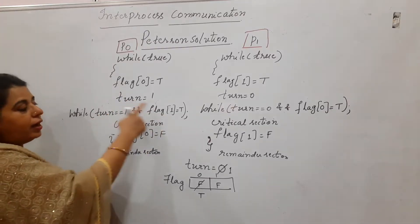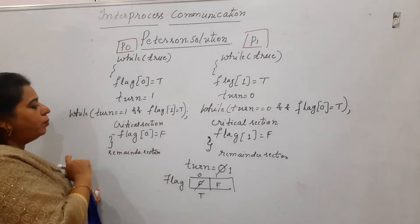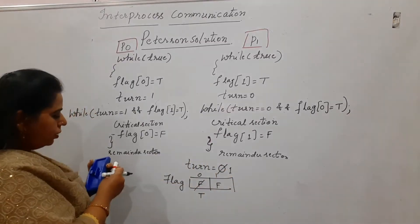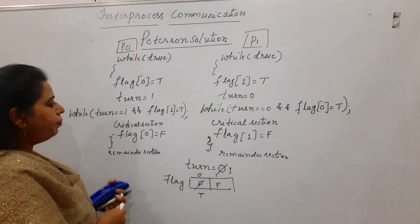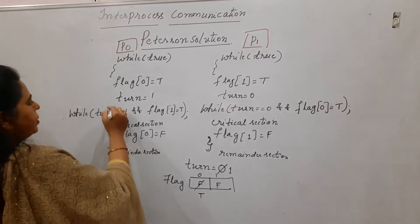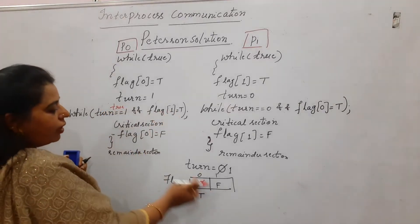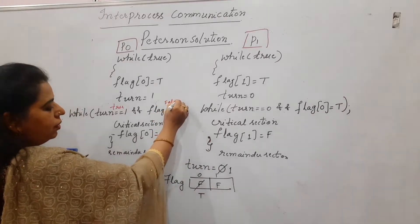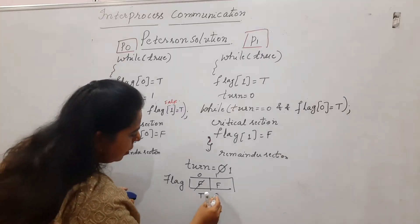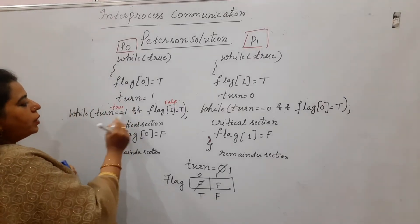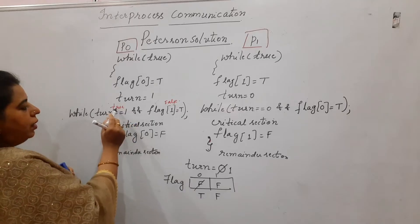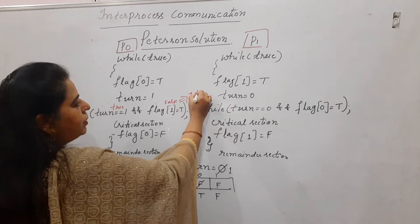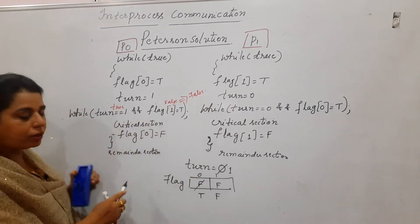P0 then tries to execute the while loop, which has two conditions: one checks turn and the other checks the flag array of the other process. Turn is equal to one — condition is true. The flag of the other process P1 is F — that is false. True AND false is false, so the while loop condition is false.